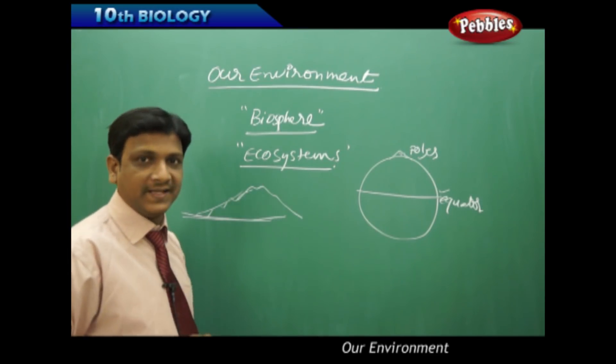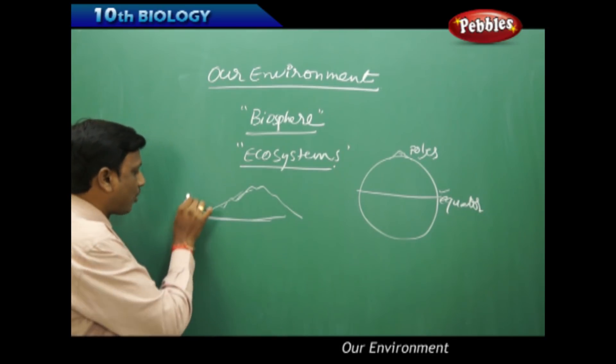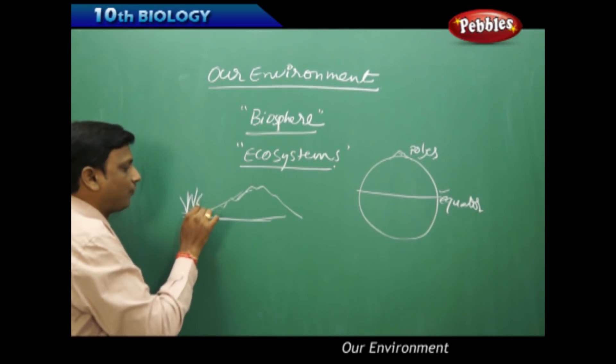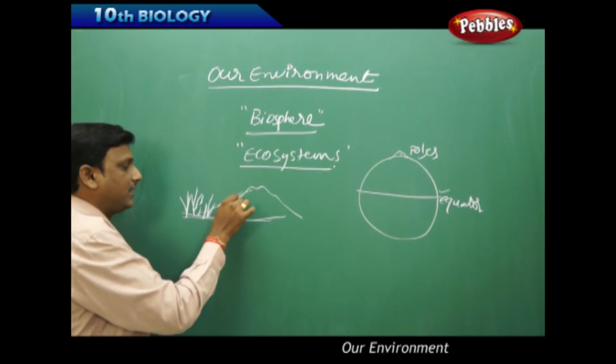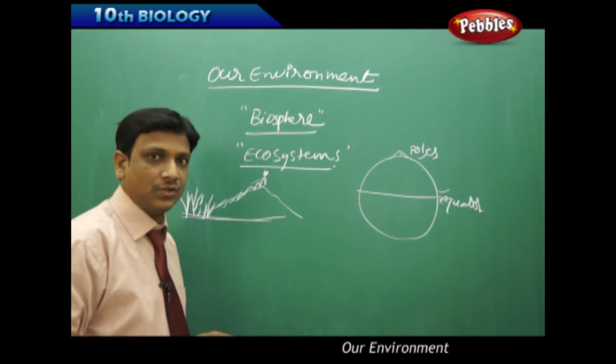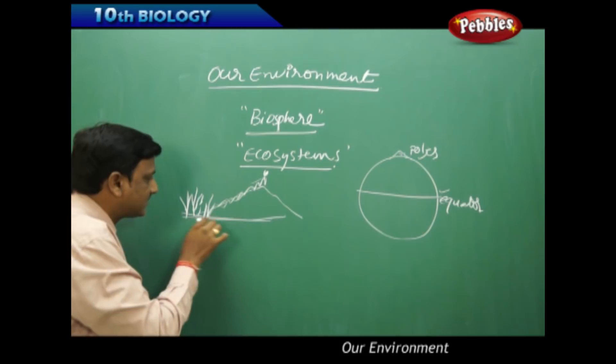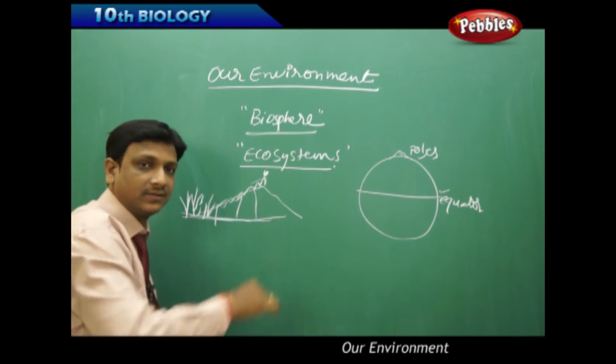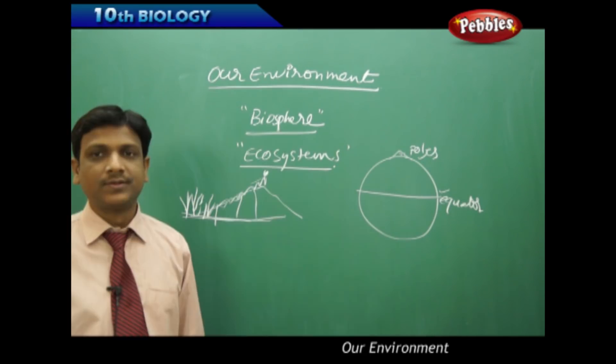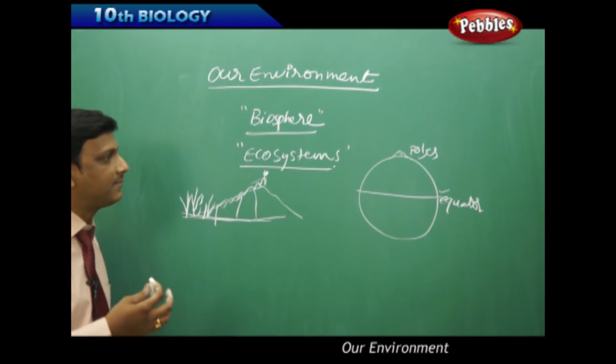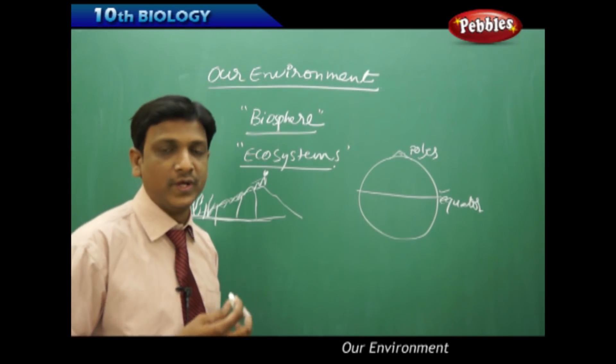At the same time, if you look at the Kilimanjaro of equatorial Africa or Himalayas in India, you will find that it starts with a tropical forest at the base and it goes to the top of the hill. So quickly, you will get various different types of ecosystems here, you can observe. So here, what are the climatic factors that influence?